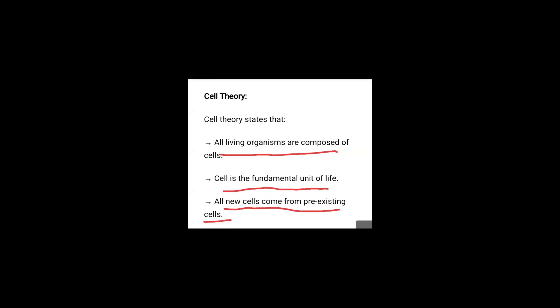Cell theory states that all living organisms are composed of cells. The cell is the fundamental unit of life. All new cells come from pre-existing cells.